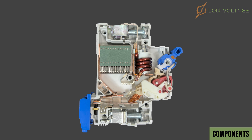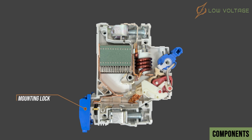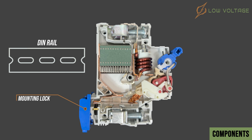The mechanical mechanism is linked to a handle to allow manual opening and closing of the MCB. MCBs are installed in distribution panels, which have a DIN rail mounting system that attaches to the MCB through the mounting lock.